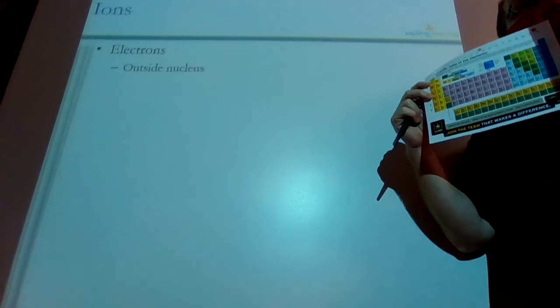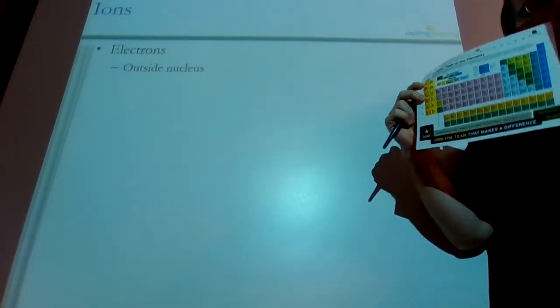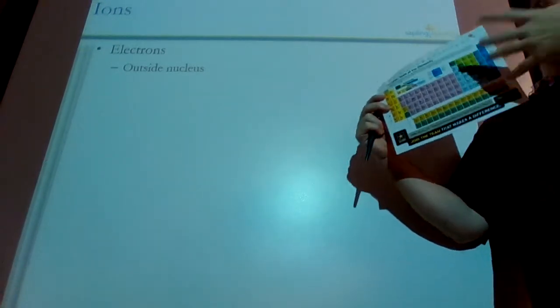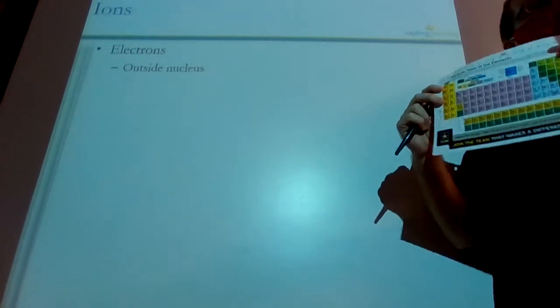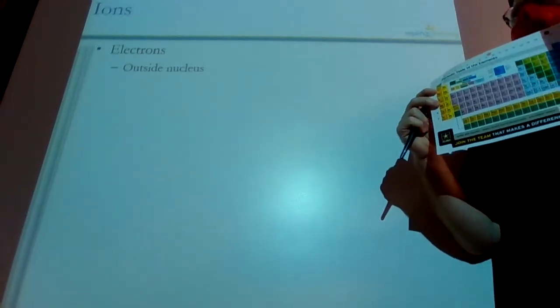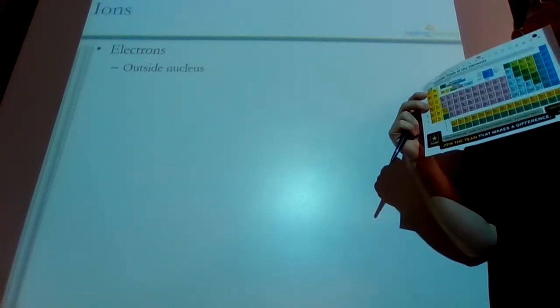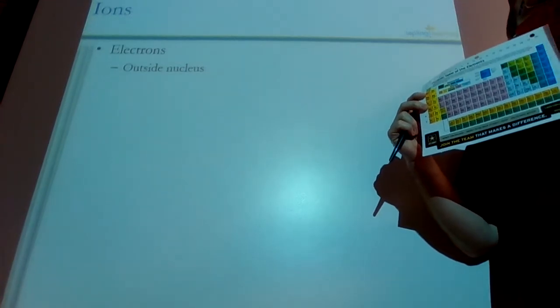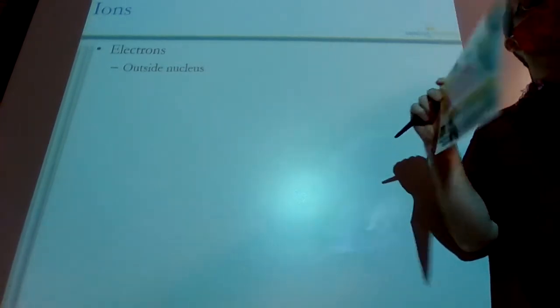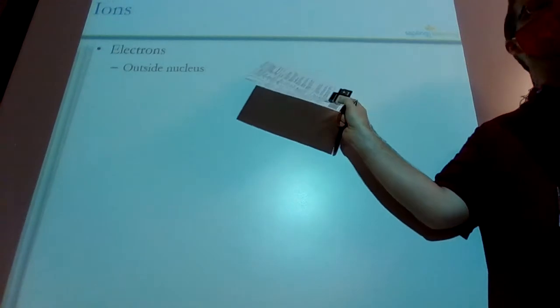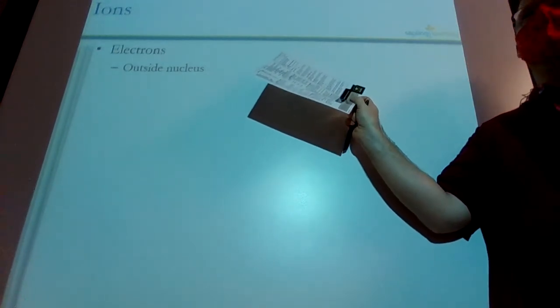Every atom has a specific number of protons. It's always going to have that number of protons, or it's going to be a different atom. So carbon will always have six protons. And what charge is a proton? Positive. Protons are positive. Neutrons are neutral. They don't have any charge. And then electrons are going to be what? Negative.